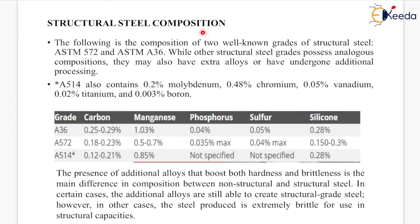Now the structural steel composition. The following is the composition of two well-known grades of structural steel: ASTM A572 and ASTM A36. While other structural steel grades possess analogous compositions, they may also have extra alloys or have undergone additional processing. A514 also contains 0.2% molybdenum, 0.48% chromium, 0.05% vanadium, 0.02% titanium, and 0.003% boron. For A36 grade, the carbon percentage ranges between 0.25% to 0.29%; manganese 1.03%, phosphorus 0.04%, sulfur 0.05%, and silicon 0.28%. The composition for ASTM A572 and A514 is shown here.